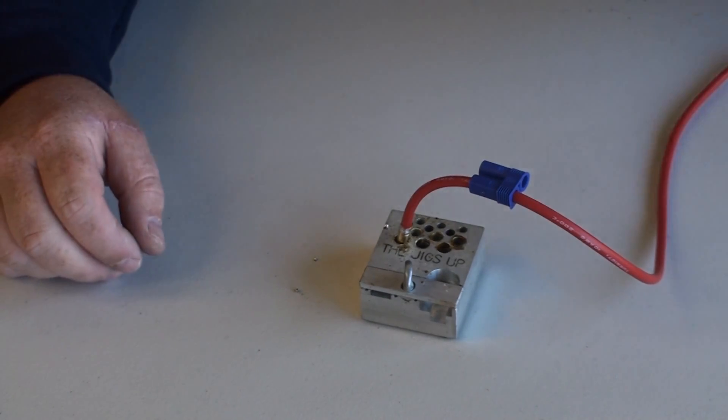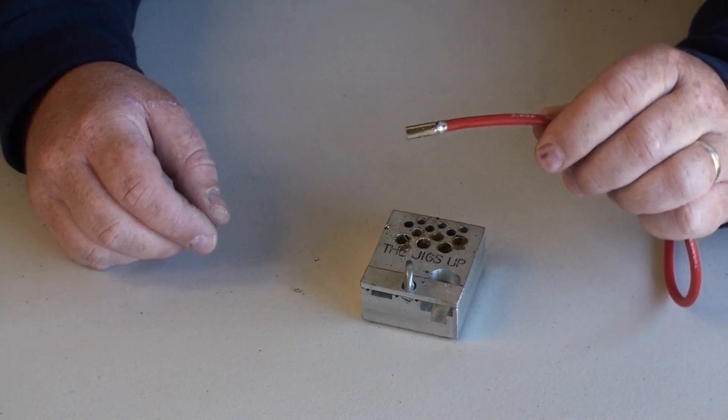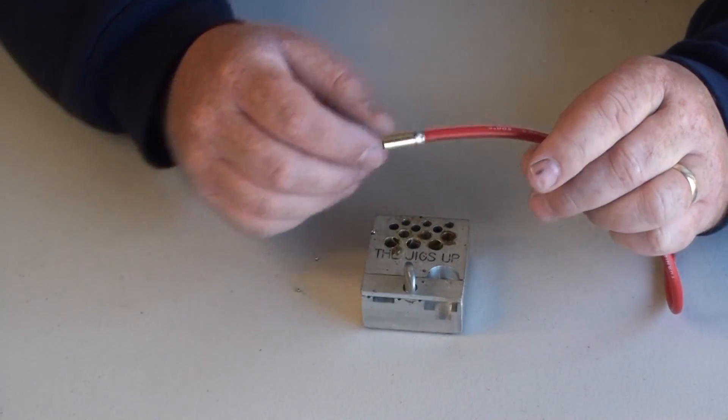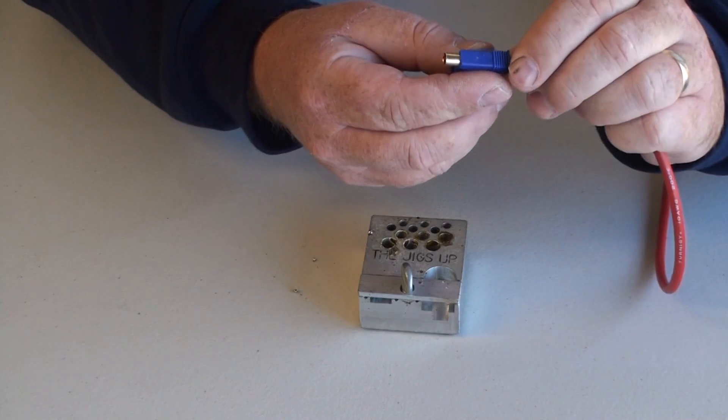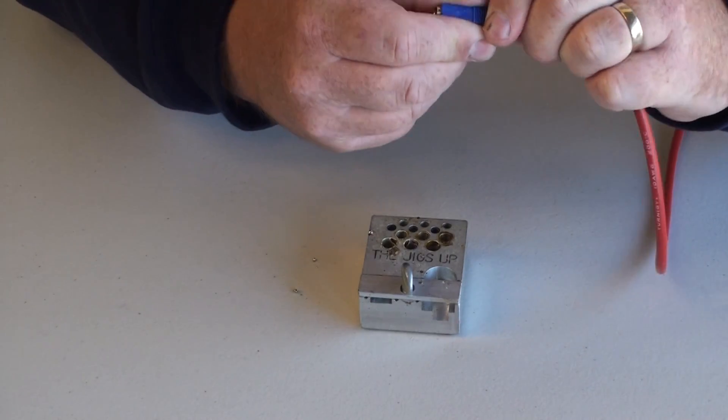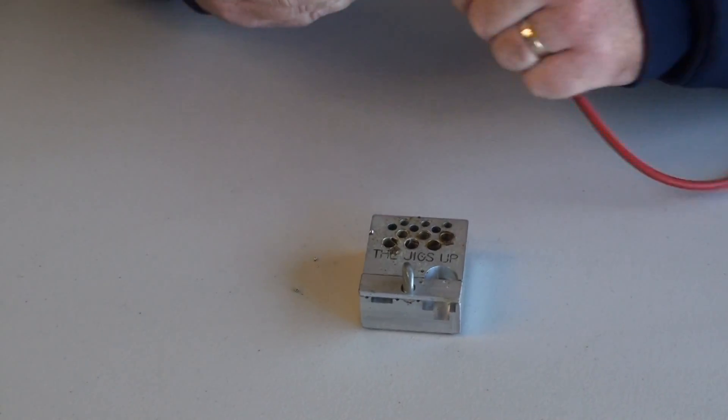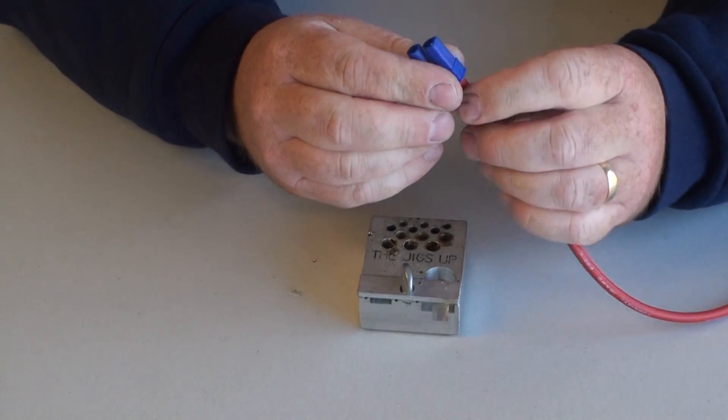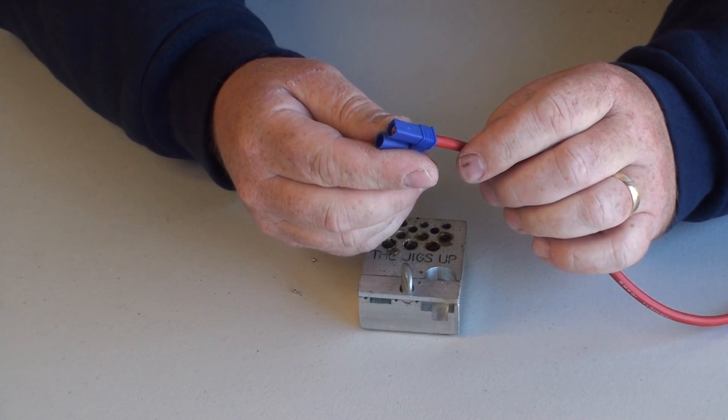Once the solder has cooled, simply remove the connector from the jig you've been using, and pull the wire back in through the plastic protector, and keep pulling. With a good tug, the connector will snap into place. It really is that simple.